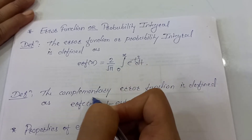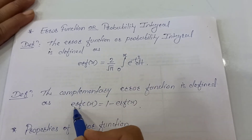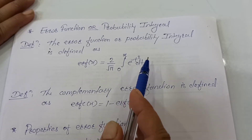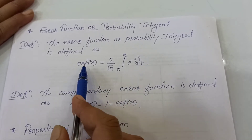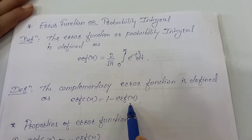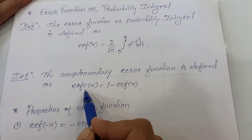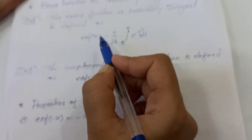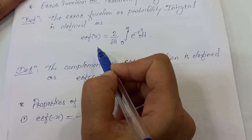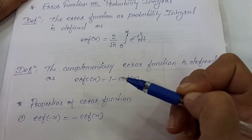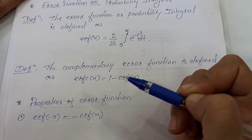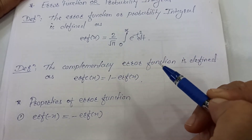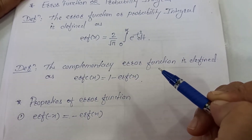The complementary error function is defined as Erfc of x equals 1 minus Erf of x. Since this is a probability integral, we take the complement of the error function, so 1 minus Erf of x is Erfc of x. This error function occurs in the solution of some partial differential equations in applied mathematics.